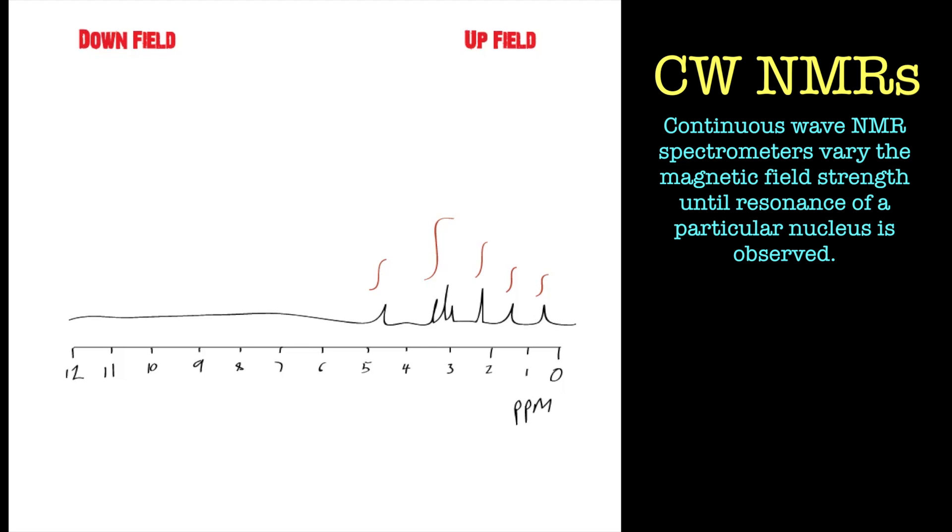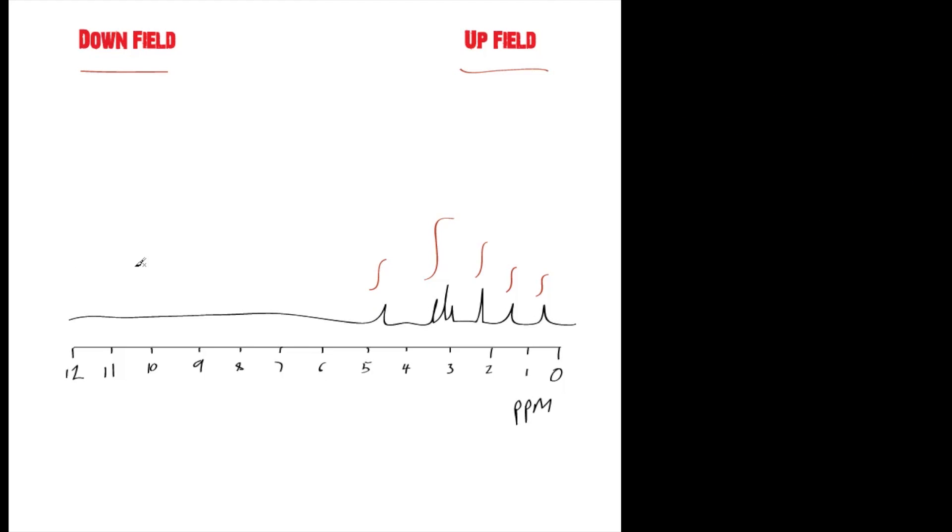But it sweeps across from downfield to upfield. And that's where those terms come from, because the field strength is supposedly changing. And it does change, basically, in the continuous wave machines.